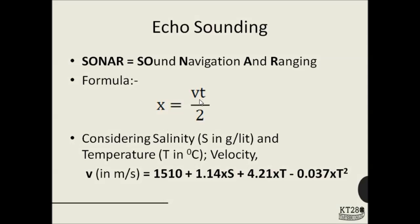The velocity of ultrasound is a function of salinity and temperature. To include those factors, we use the formula: V = 1510 + 1.14×S + 4.21×T − 0.037×T², where V is velocity in meters per second, S is salinity in grams per liter, and T is temperature in degrees Celsius.